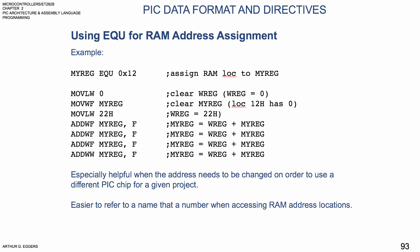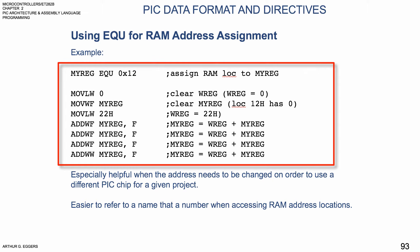Now we look at using the EQ, the equate, for RAM address assignment. Another common usage of EQ is for the address assignment of the general purpose region of the file register. We'll examine a rewrite of the earlier example using EQ. In the first line we have a line called MyReg, and we're going to equate it to location 12, assigning a location in RAM to MyReg.